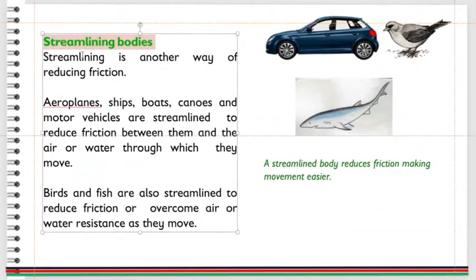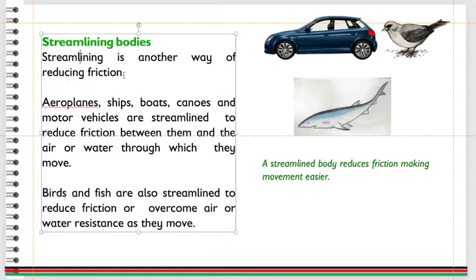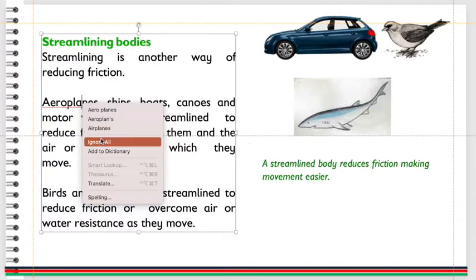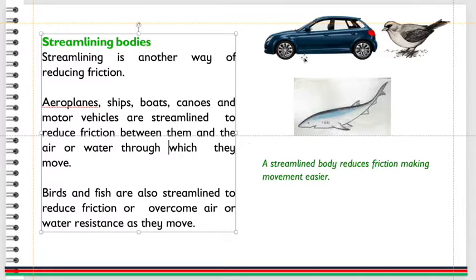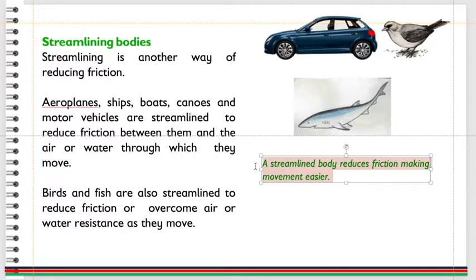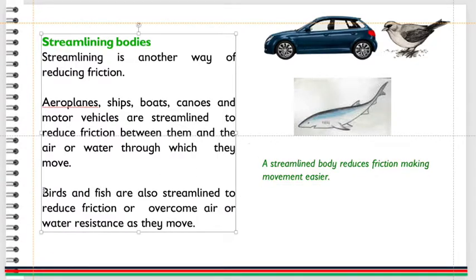Streamlining bodies. Streamlining is another way of reducing friction. Airplanes, ships, boats, canoes, and motor vehicles are streamlined to reduce friction between them and the air or water through which they move. Birds and fish are also streamlined to reduce friction or overcome air or water resistance as they move.